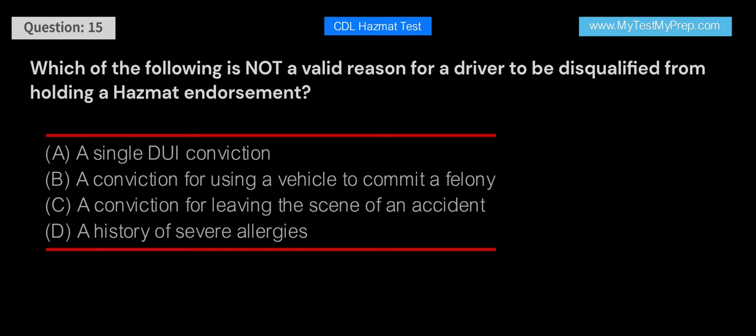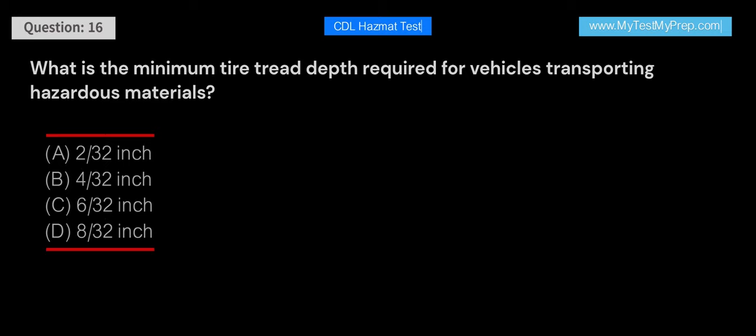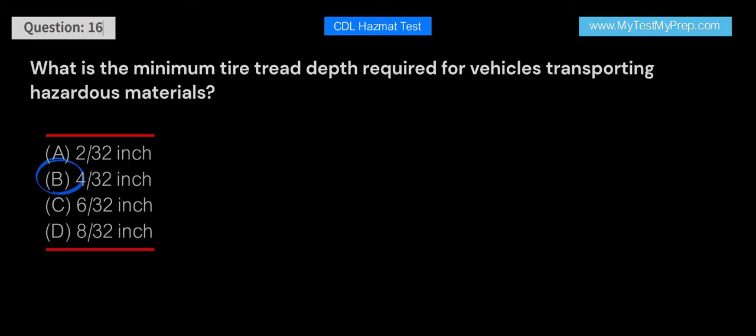What is the minimum tire tread depth required for vehicles transporting hazardous materials? A. 2/32 inch. B. 4/32 inch. C. 6/32 inch. D. 8/32 inch. Answer: B. The minimum tire tread depth required for vehicles transporting hazardous materials is 4/32 inch. This ensures adequate traction and helps maintain control of the vehicle.